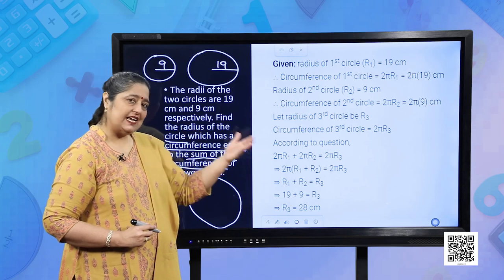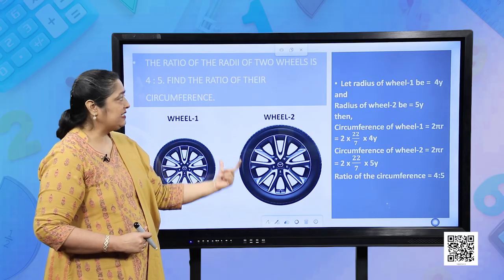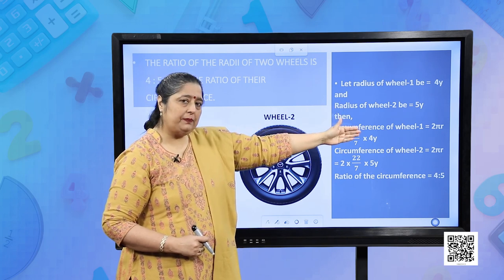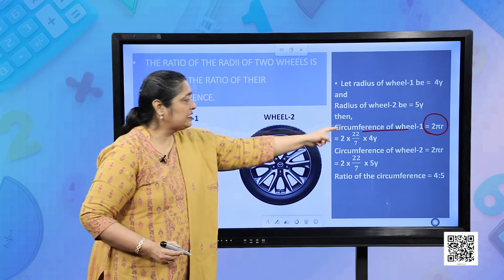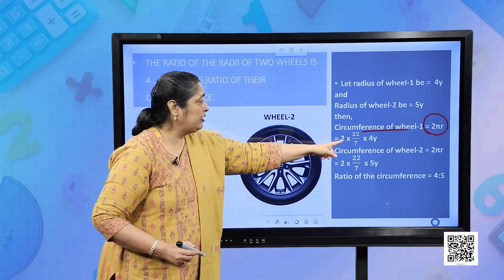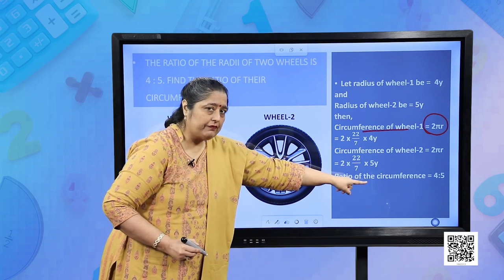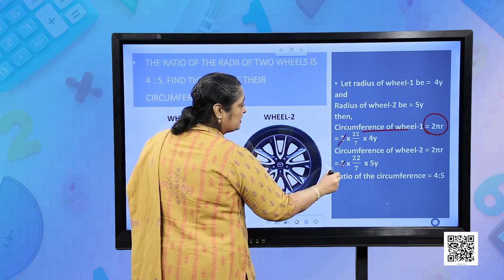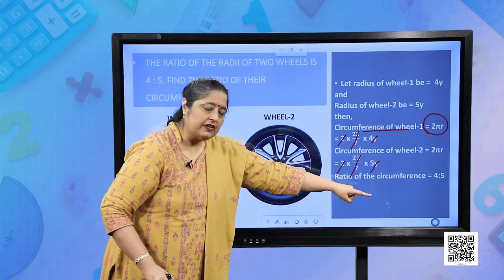The ratio of the radii of two wheels is 4:5. Find the ratio of their circumferences. Let the radii be 4y and 5y. The circumference of each wheel is 2πr. Substituting and taking the ratio, 2 cancels with 2, 22/7 cancels with 22/7, and y cancels with y, giving the ratio of circumferences as 4:5.